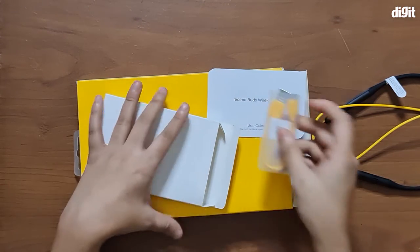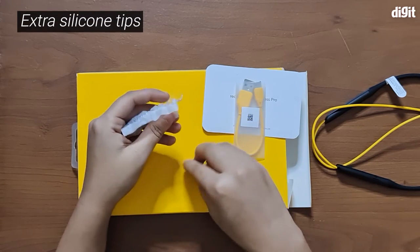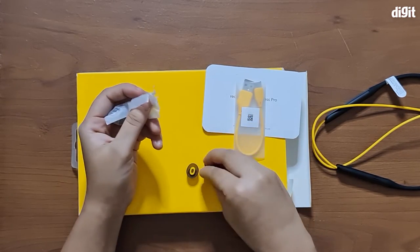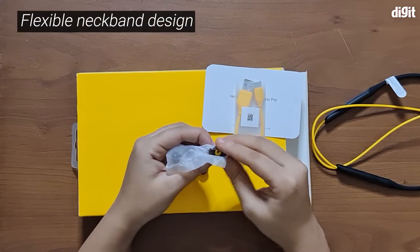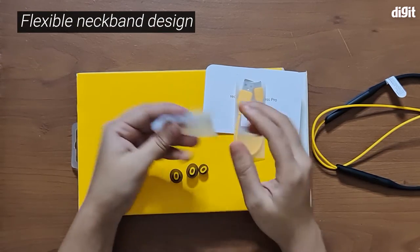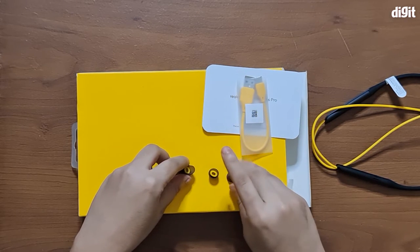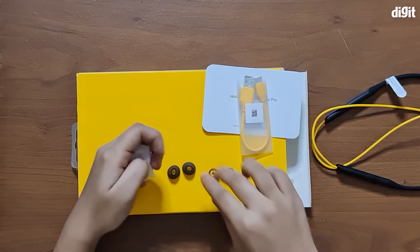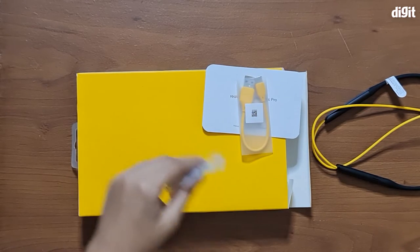You also get two additional silicone tips in here. This also comes with a yellow and black dual tone, which is similar to the earphones. It's nice that Realme has maintained this consistency throughout its design language. These are the small size while the other ones are the large size. We're guessing the medium ones are fitted on the earbuds themselves. Now let's set all of this aside.